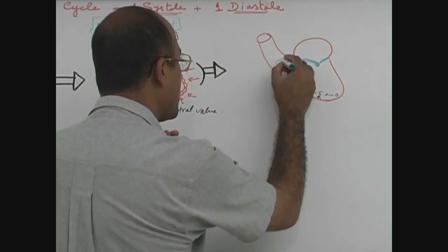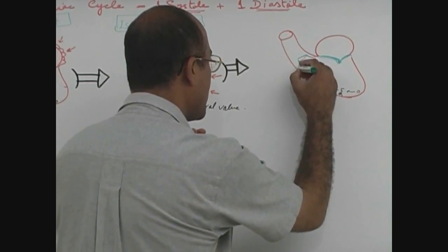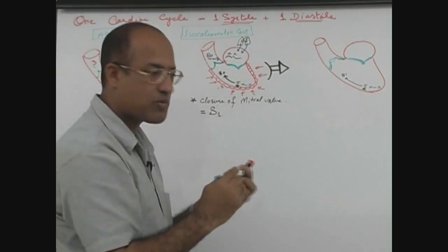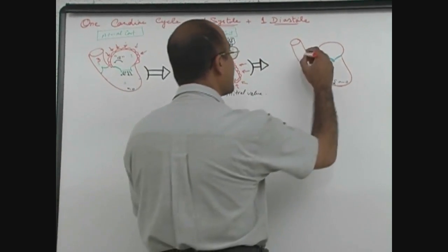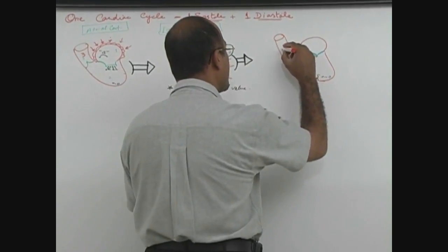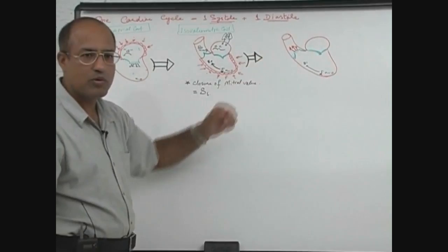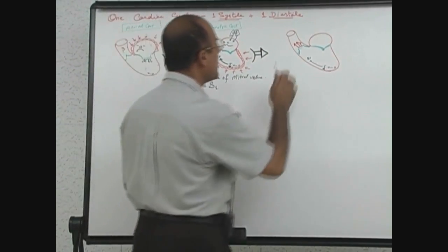Which valve will open now? Aortic valve. And when aortic valve will open, blood will start ejecting rapidly from the ventricles, and blood is being pumped to aorta.